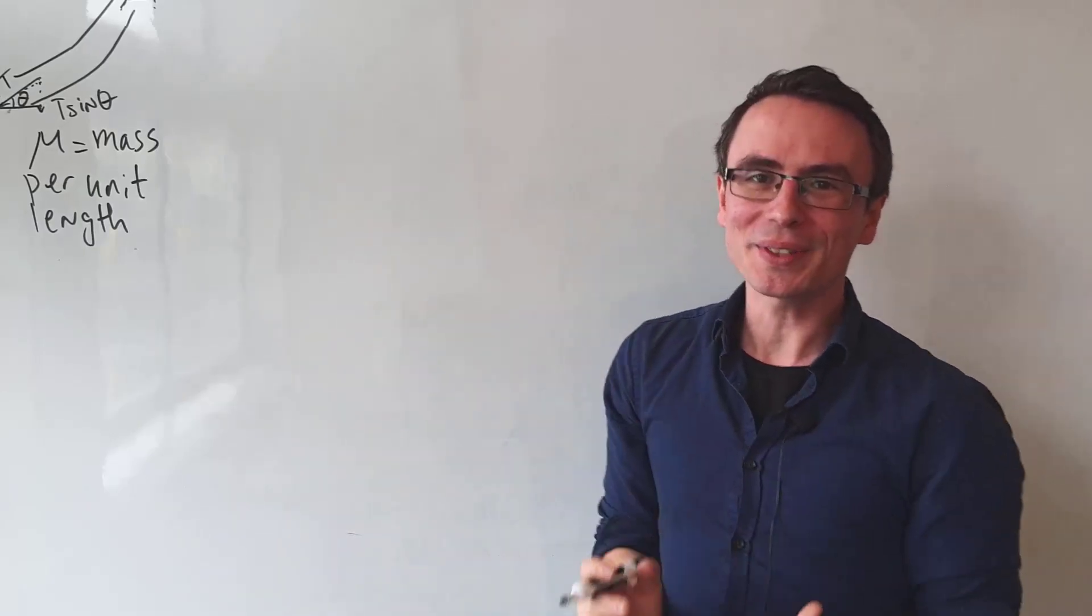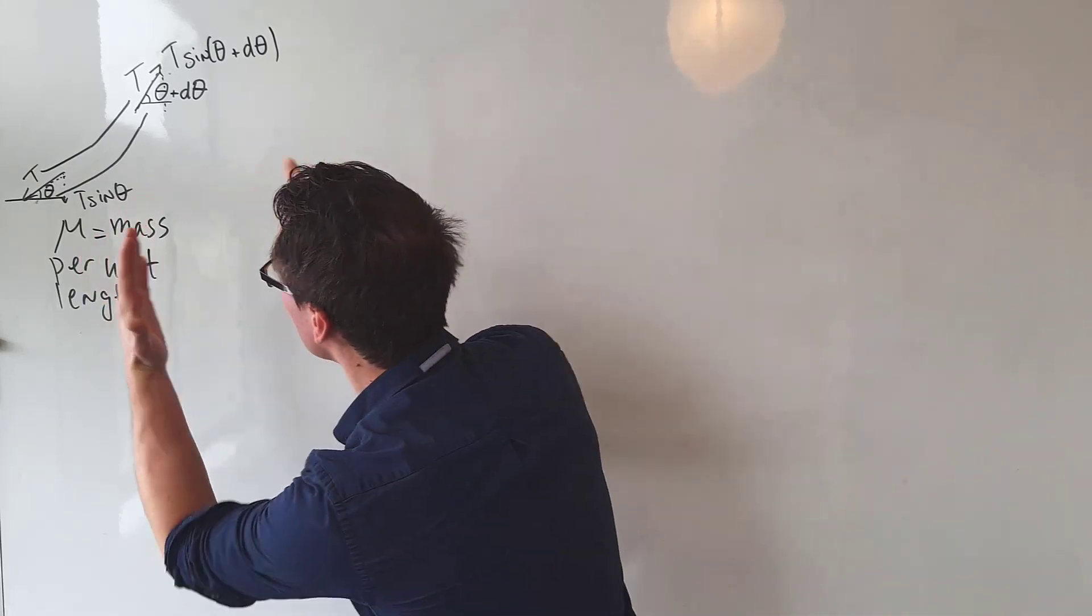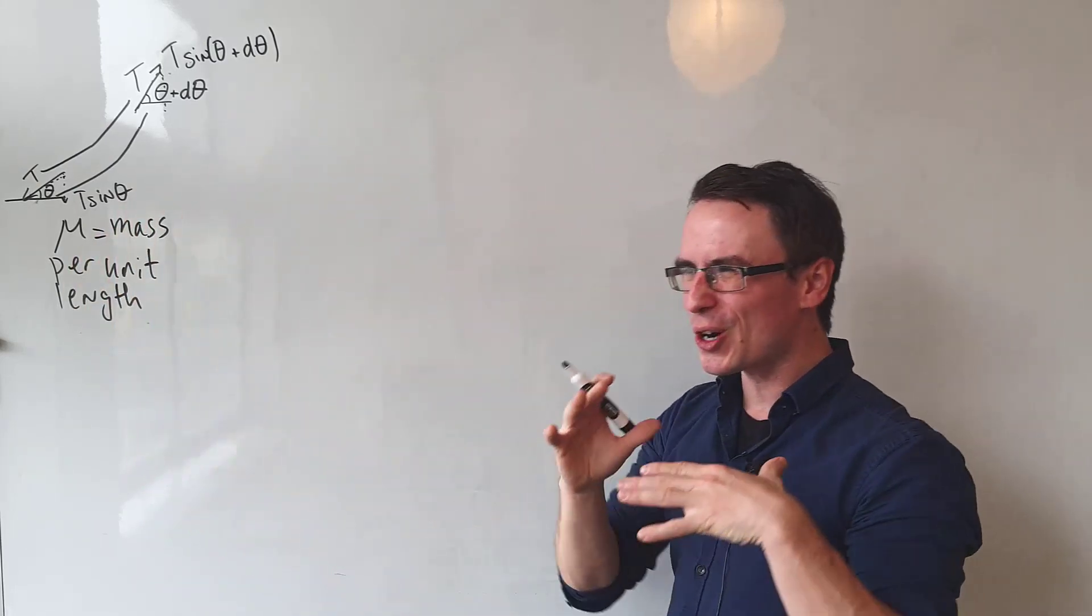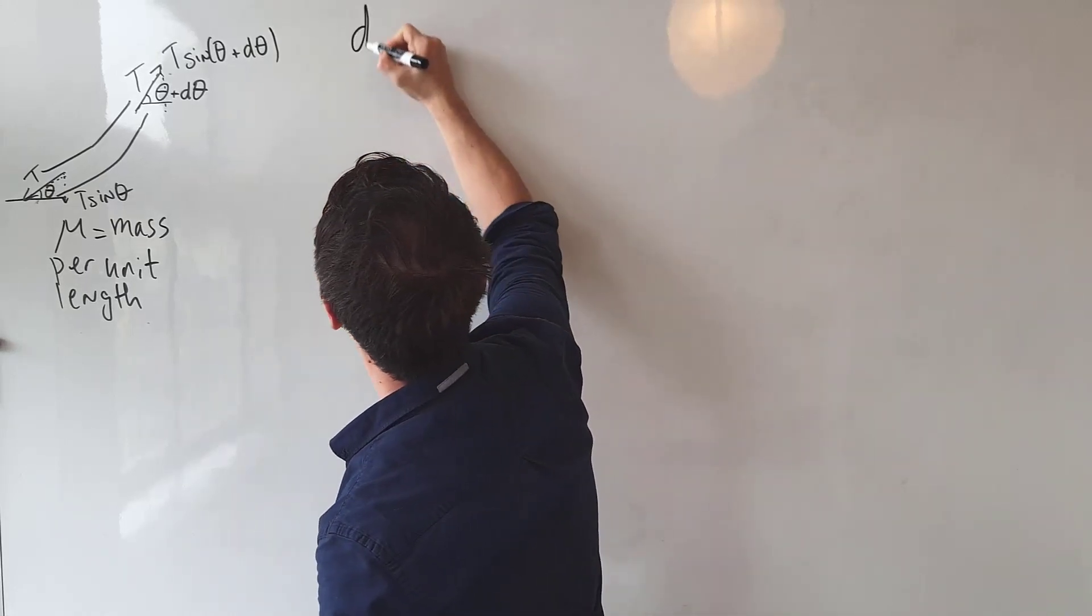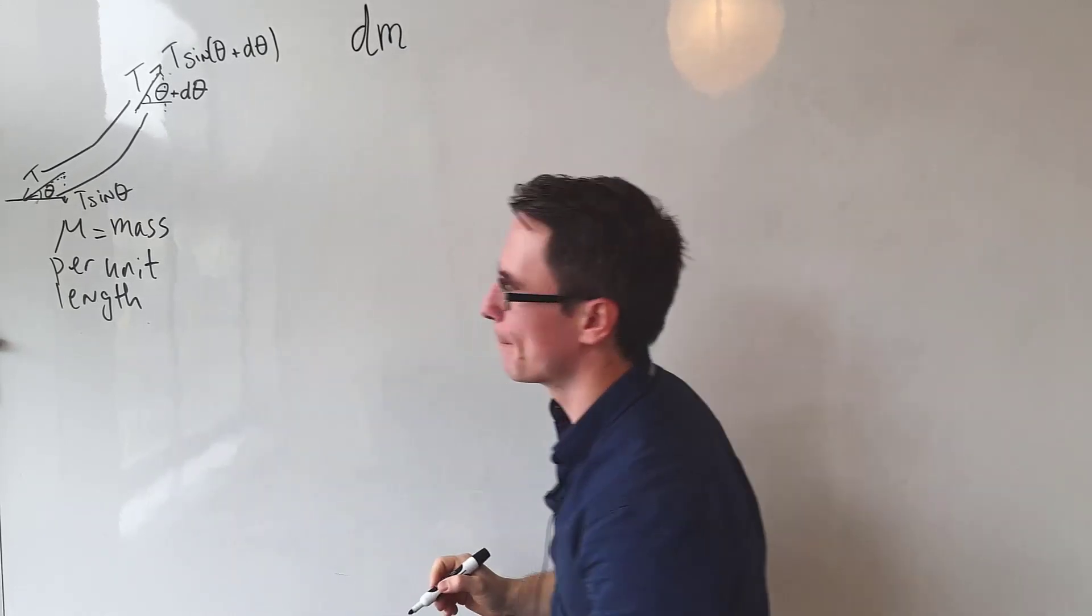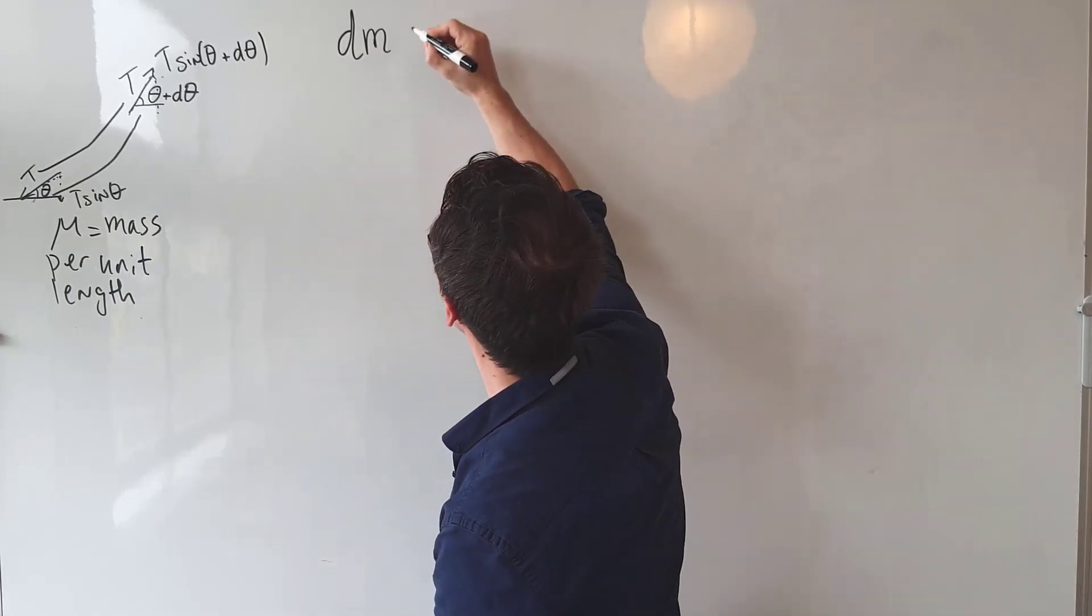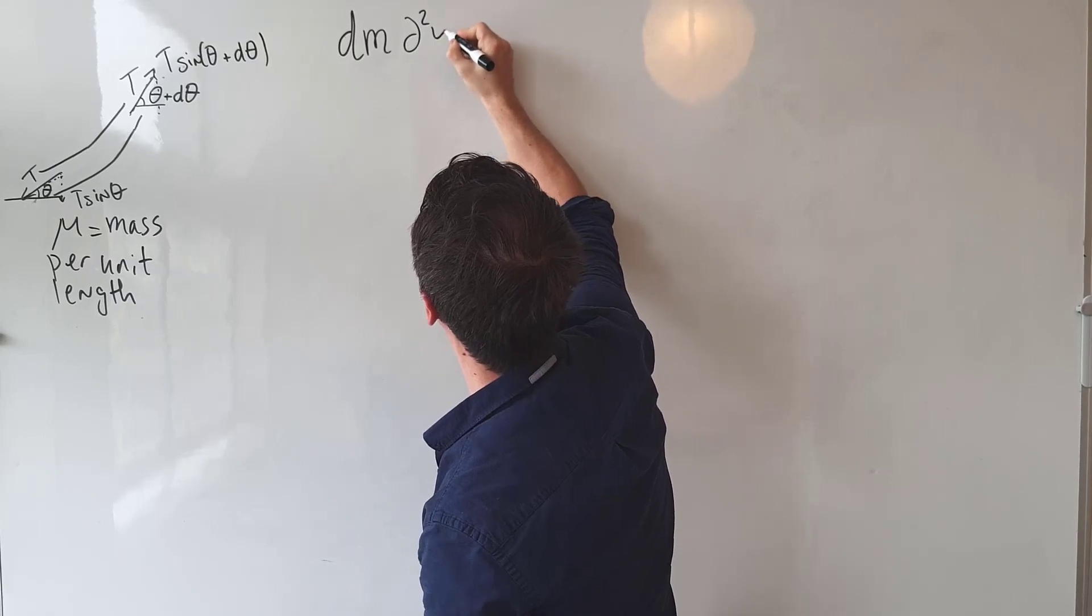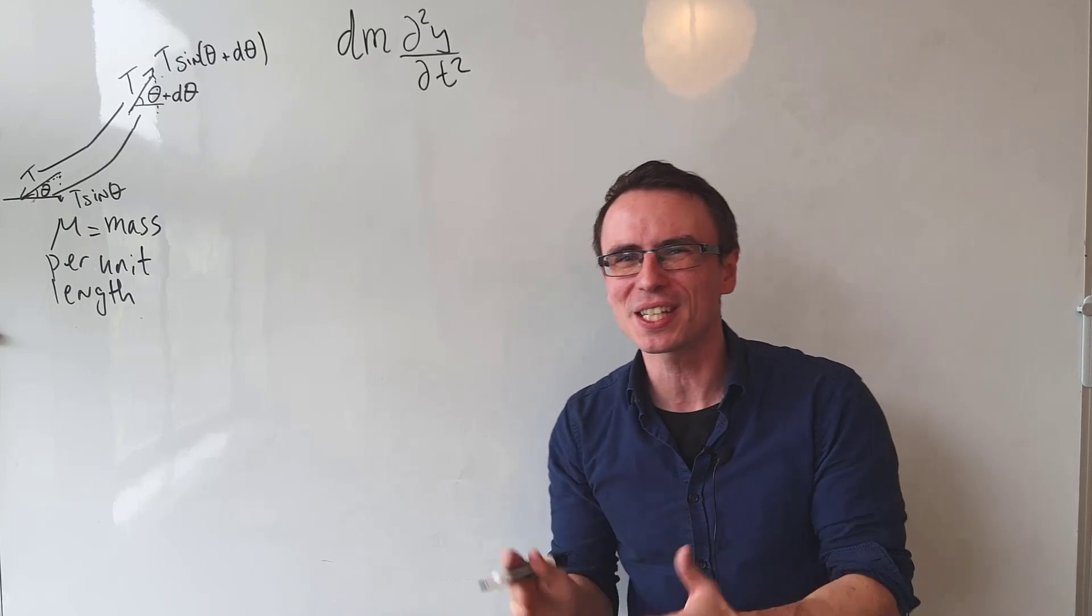So let's apply Newton's second law. Mass times acceleration. Because we're taking a small portion of the wave, I'm just going to say that this tiny bit of mass is going to be equal to dm. Let's say that our vertical displacement is just y, so we can write the acceleration as d²y/dt². Notice that I'm using partial derivatives.